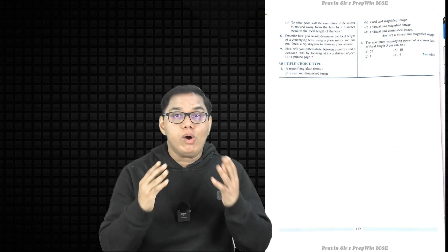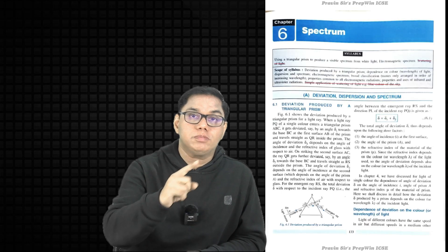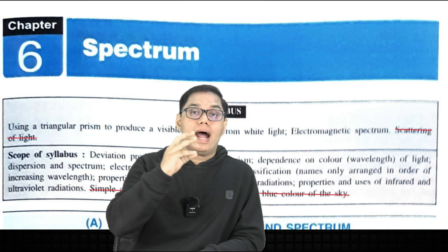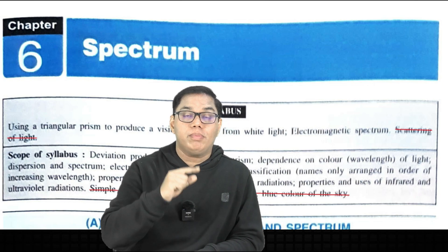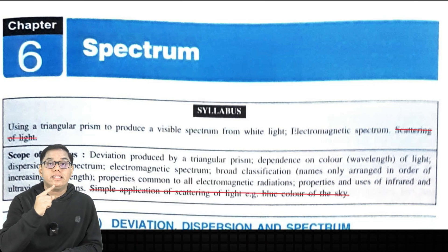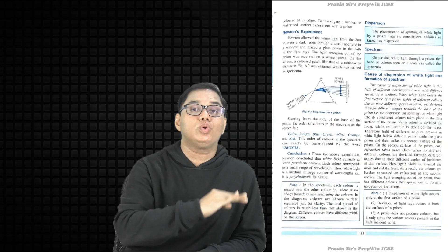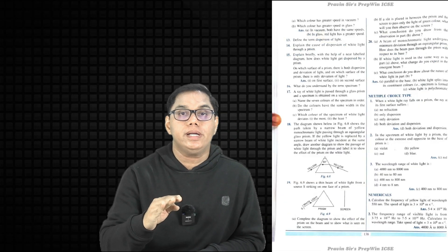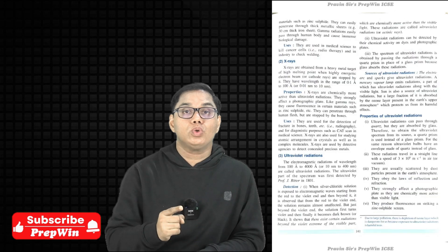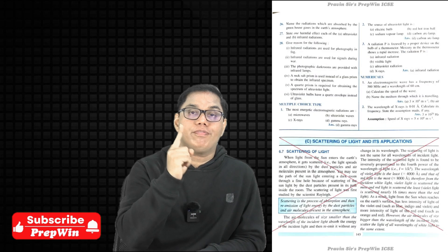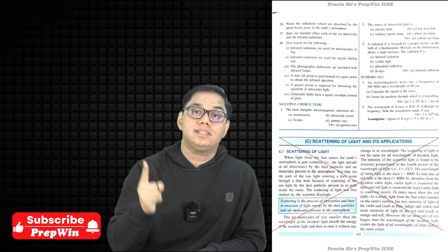Moving to Chapter 6 Spectrum: the first two parts are included in the syllabus, but the third part — Scattering of Light and its Applications — is totally omitted. Pages 145, 146, and 147 covering part 6C are entirely omitted.